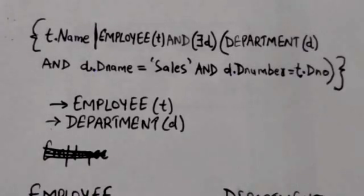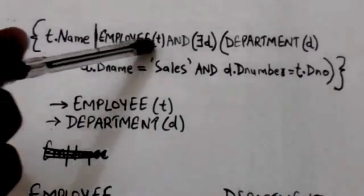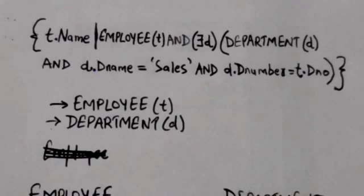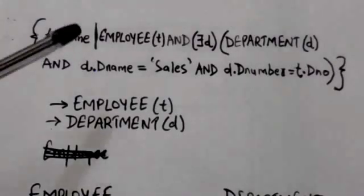Those tuples which satisfy the condition specified after the bar - in this query their name attribute will be retrieved.